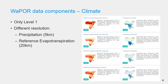The climate data components include precipitation and reference evapotranspiration. These components are available at different temporal resolutions: daily, decadal, monthly, and annual. Even those available at level 1, the spatial resolutions are different than 250 meters. To be specific, precipitation has a resolution of 5 kilometers and reference evapotranspiration of about 20 kilometers.